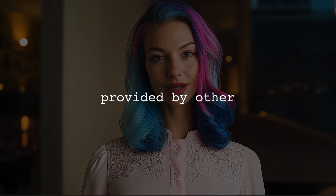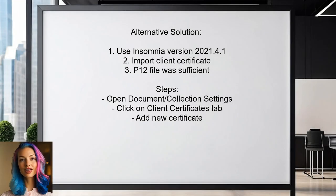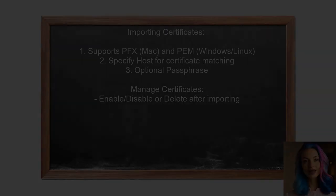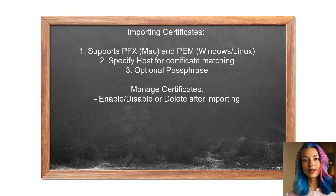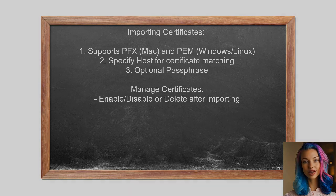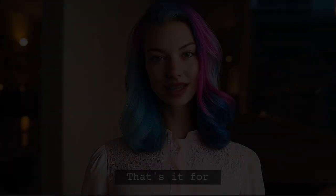Now let's look at the answers provided by other users. One user found success using Insomnia version 2021.4.1 for a service where other tools like SOAP UI and Postman failed. They followed simple steps to import their Client Certificate, and just the P12 file was sufficient for their needs. To import certificates, Insomnia supports PFX for Mac and PEM for Windows and Linux. Users need to specify the host and can add a passphrase if required. After importing, certificates can be enabled, disabled, or deleted.